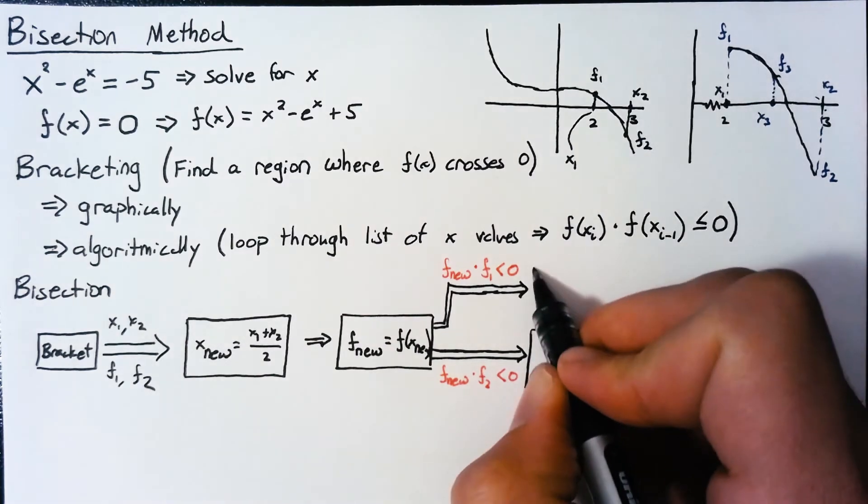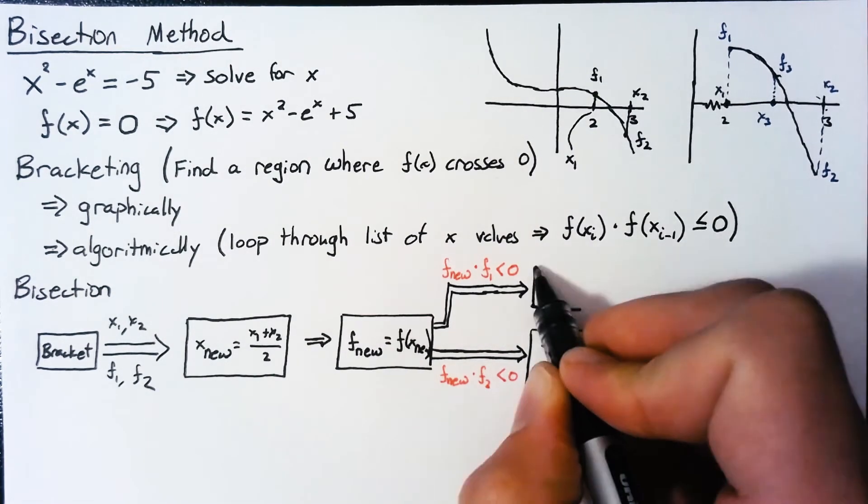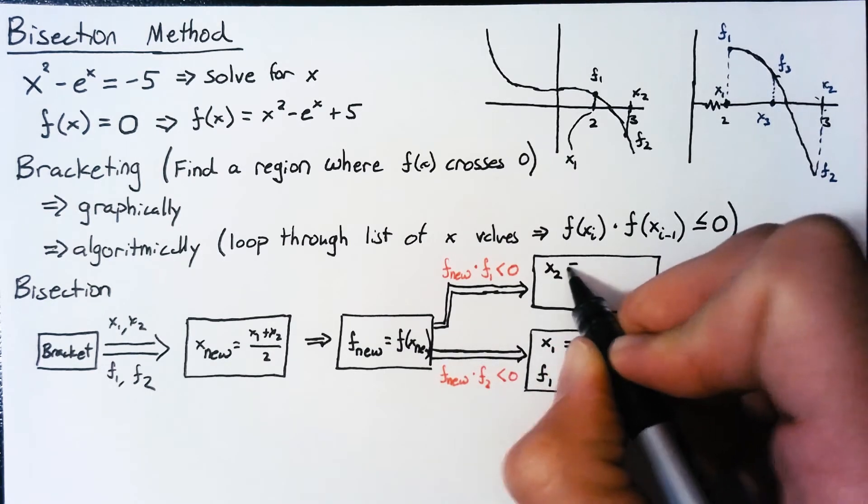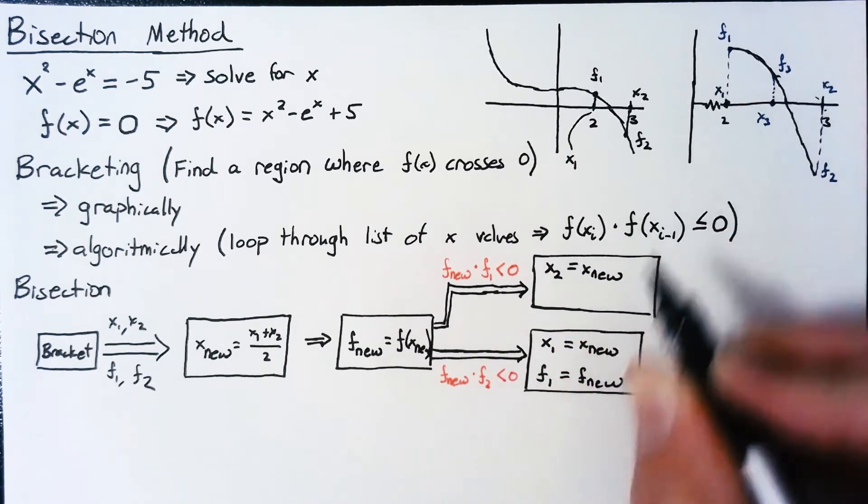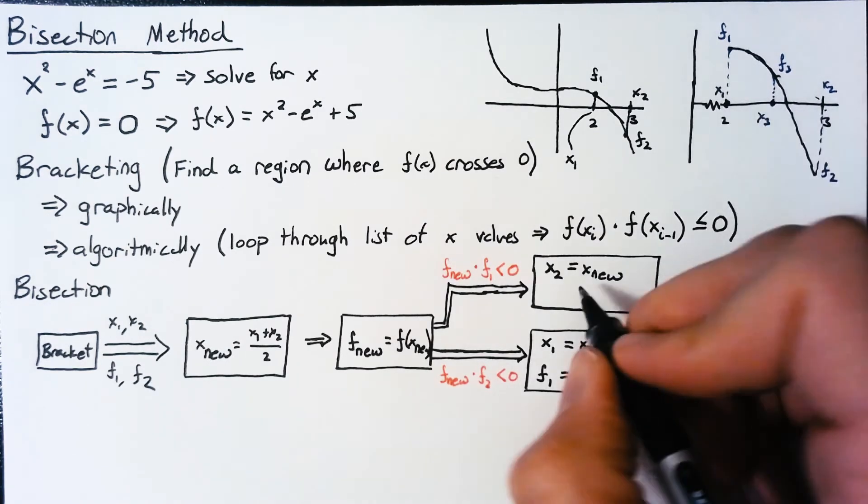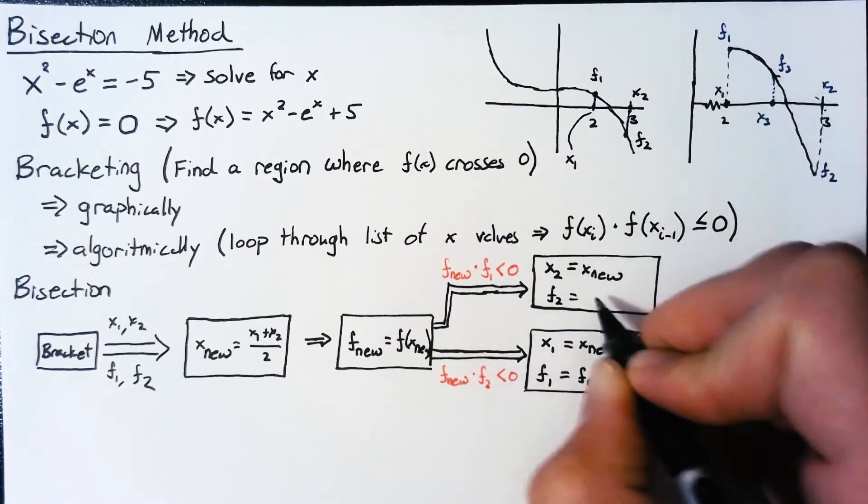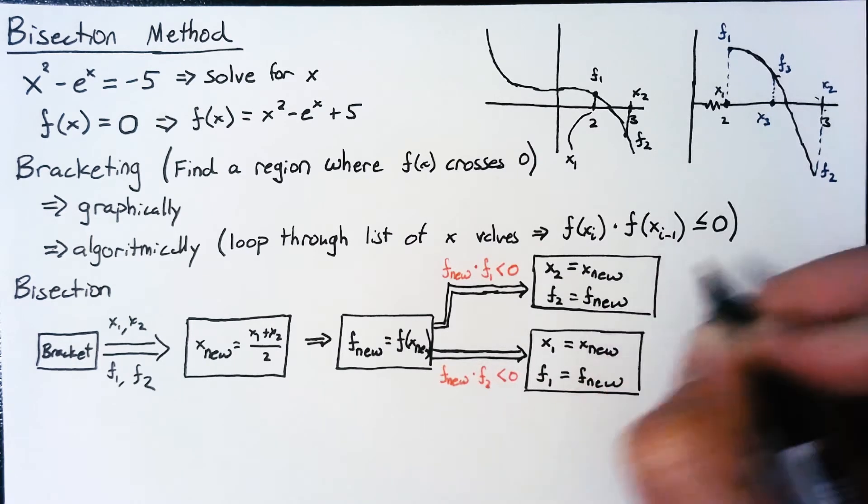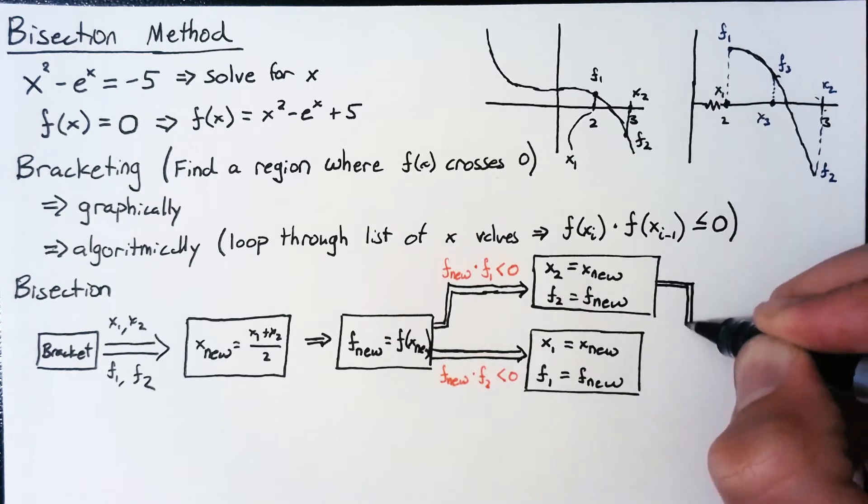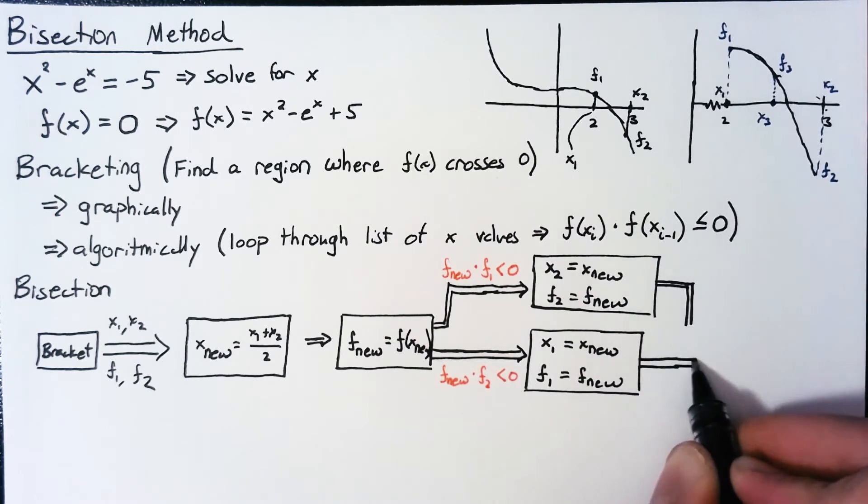So if this is what we need to do here, the other option, if it's in the other interval, you'll have to set this as x2 equal to x nu, overriding x2 instead. We're saying that it's in this region instead. And f2 will be equal to f nu. Now, whatever the case, whatever happens, we'll need to evaluate what our error is.